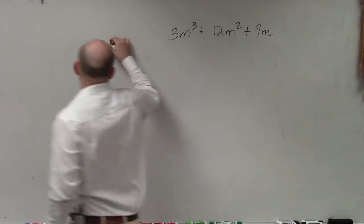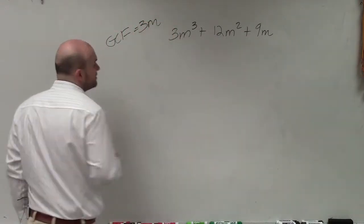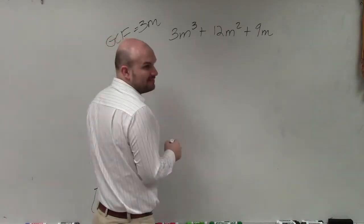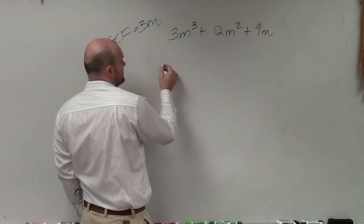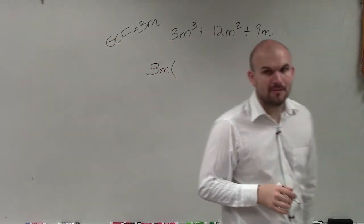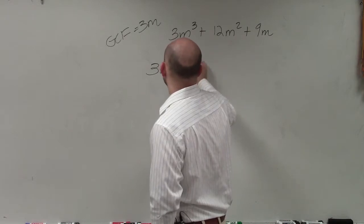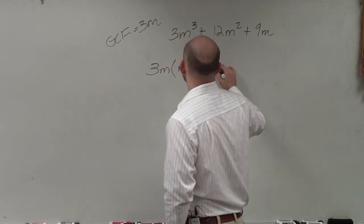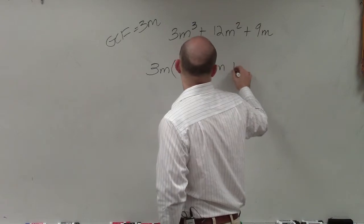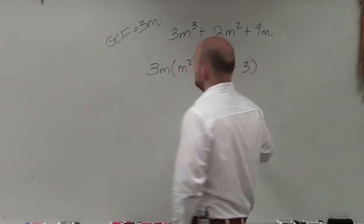So in this case, you can see that the common factor is going to be 3m. I can divide everything by 3m. So I'm going to divide out a 3m, and when I divide out a 3m, basically what I'm doing is I'm going to be left with m squared plus 4m plus 3.